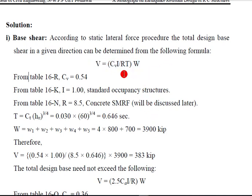We have w1, w2, w3, w4, w5. Add all the loads which is equal to 3,900 kips. Now you can put the value in this equation: CV 0.54, I is 1, R is 8.5, T is 0.646, and W is 3900. After calculation we get 383 kips.